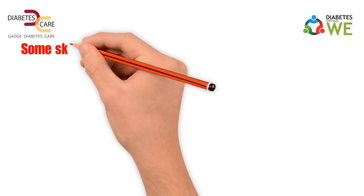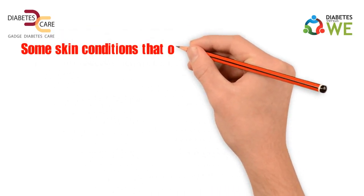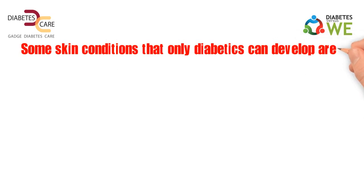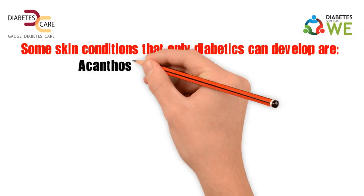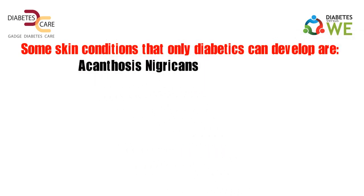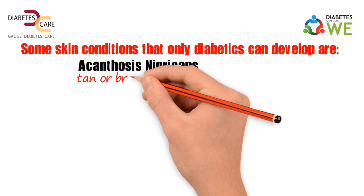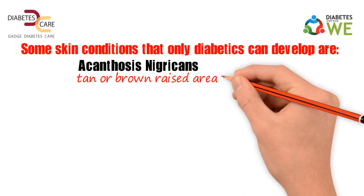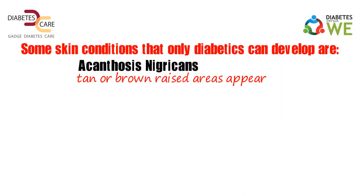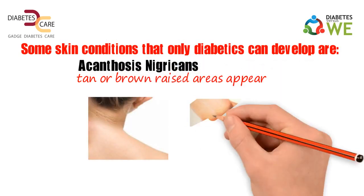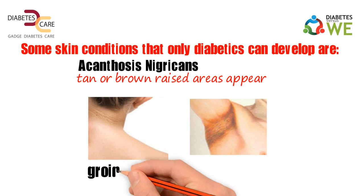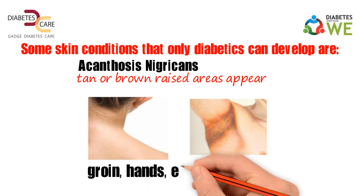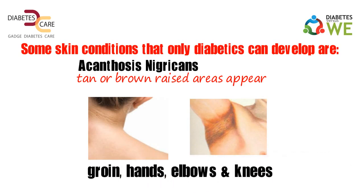Some skin conditions that only diabetics can develop include Acanthosis nigricans, in which tan or brown raised areas appear on the sides of the neck, armpits, groin, hands, elbows, and knees.